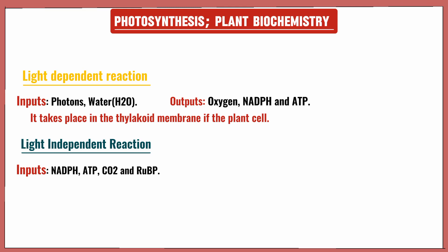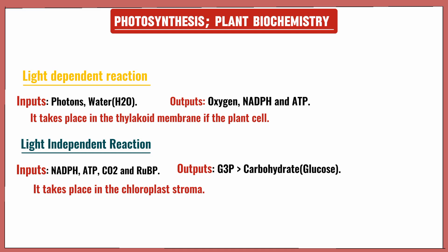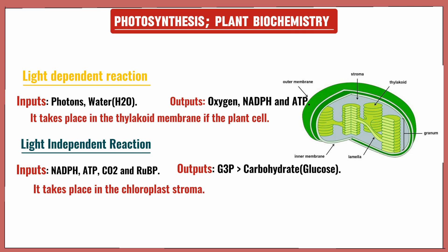The light-independent reaction involves inputs of high-energy molecules — NADPH and ATP — produced as outputs in the first phase, together with carbon dioxide and RuBP, to produce the output G3P, which is the carbohydrate — essentially glucose. The light-independent reaction takes place in the chloroplast stroma.